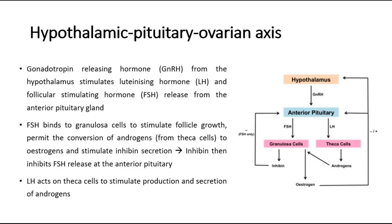The gonadotropin-releasing hormone from the hypothalamus will stimulate the release of luteinizing hormone and follicle-stimulating hormone from the anterior pituitary gland. FSH will then bind to the granulosa cells in the ovaries to stimulate follicle growth, permit the conversion of androgens to oestrogen, and also stimulate the secretion of inhibin, where inhibin will inhibit further FSH release at the anterior pituitary gland due to the negative feedback mechanism.